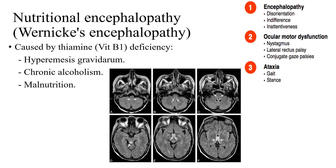An important treatable cause is Wernicke's encephalopathy, caused by vitamin B1 (thiamine) deficiency. It can be due to hyperemesis gravidarum — when called to gynecology for a patient with disturbed conscious level, keep Wernicke's in mind. Patients with chronic alcoholism or malnutrition typically present with encephalopathy, ocular motor dysfunction, and gait disturbance or ataxia. On MRI, bilateral hyperintense lesions are found in the brain stem and thalamus.